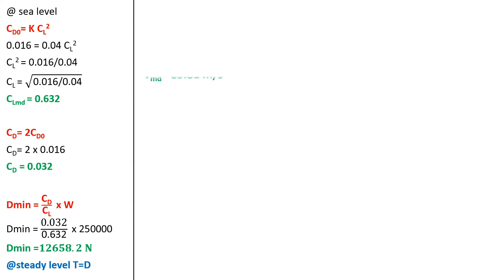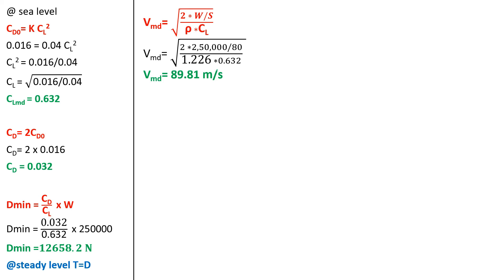We have now solved the first part by finding the minimum thrust. Next we find the true airspeed at sea level. The true airspeed at minimum drag condition, V_md, equals the square root of 2 times (weight / wing area) divided by (density times coefficient of lift). Substituting the given values of weight, wing area, and density along with the found CL, the true airspeed at minimum drag condition is found to be 89.81 meter per second.